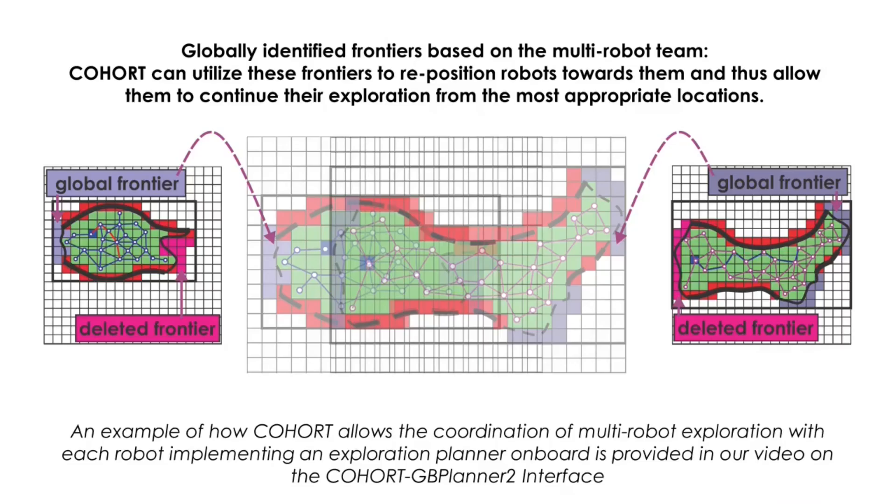The remaining globally identified frontiers, based on the multi-robot team, can then be utilized by COHORT to reposition the robots of the team towards the areas of the map most likely to enable efficient exploration.